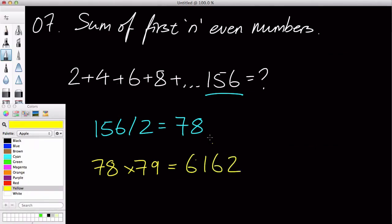And, surprise, surprise, that is the answer to this question. The sum of the first n even numbers, in this case, 156. So, that equals 6166.